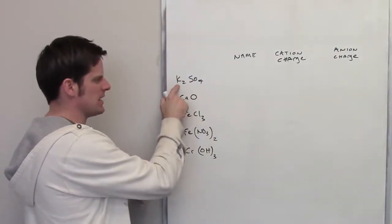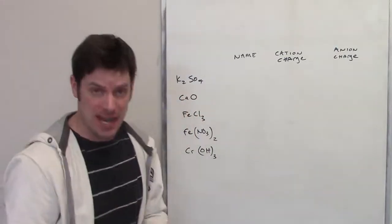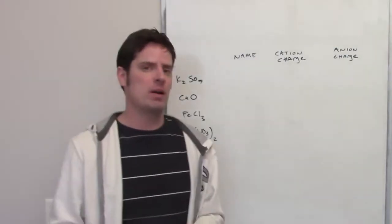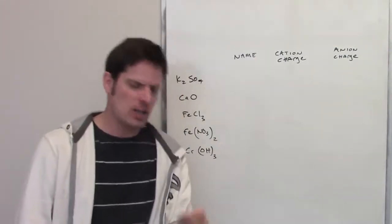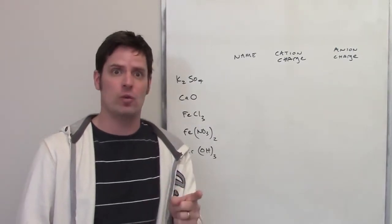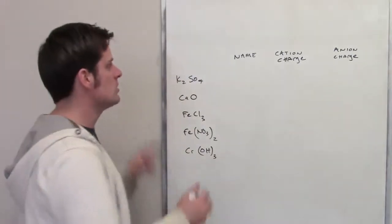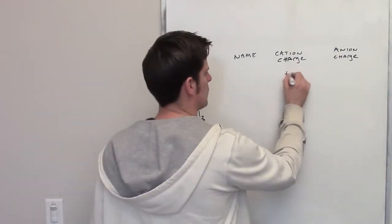We can begin by saying that the element K, potassium, is in column one of the periodic table. Because it's in column one of the periodic table, when it's in an ionic compound it can only exist as having one charge, which is a plus one. You can't have a potassium plus two or plus three or something ridiculous like that. So the cation charge is obviously going to be plus one.